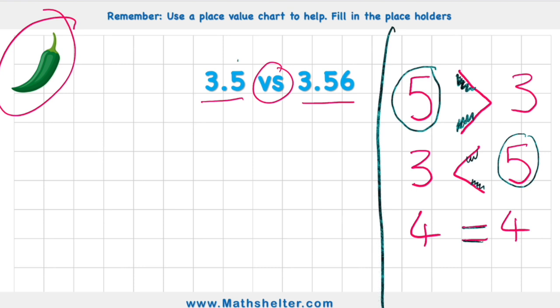And we're looking back at 3.5 compared to 3.56. Well, what are we going to use to help us here? Well, we need a place value chart because as we can see my 3.5 only has one digit after the decimal, but my 3.56 has two. So in order to compare, I need to make sure they have the same amount of digits after the decimal.